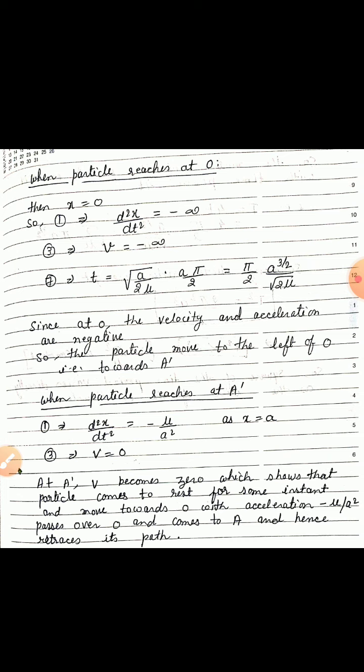When x = 0 (point O): equation 1 implies d²x/dt² = −∞, equation 3 implies v = −∞, and equation 7 implies t = √(a/2μ) · (aπ/2) = π/2 · a^(3/2) / √(2μ). Since at O the velocity and acceleration are negative (infinite), the particle moves to the left of O, that is towards A'.